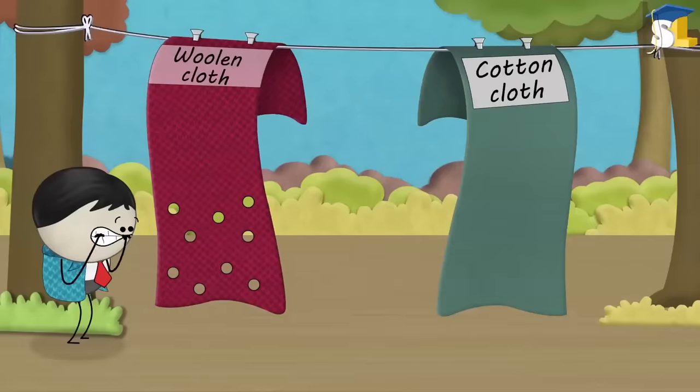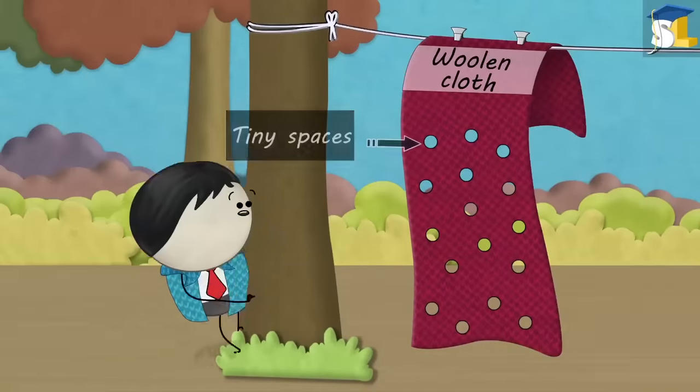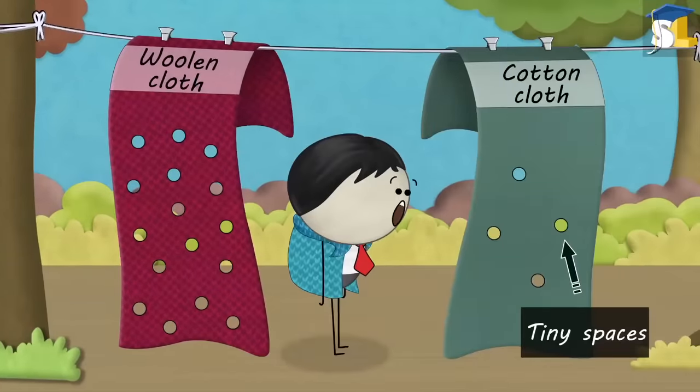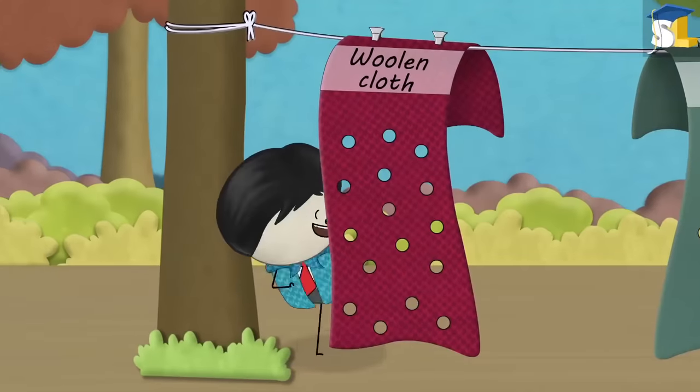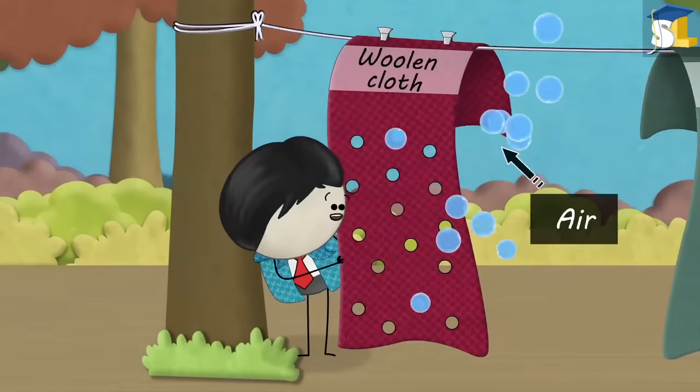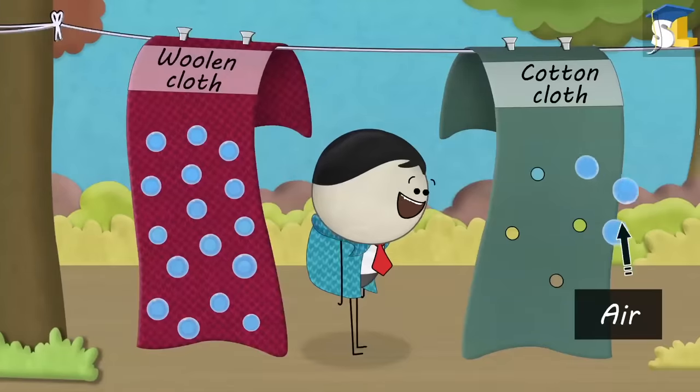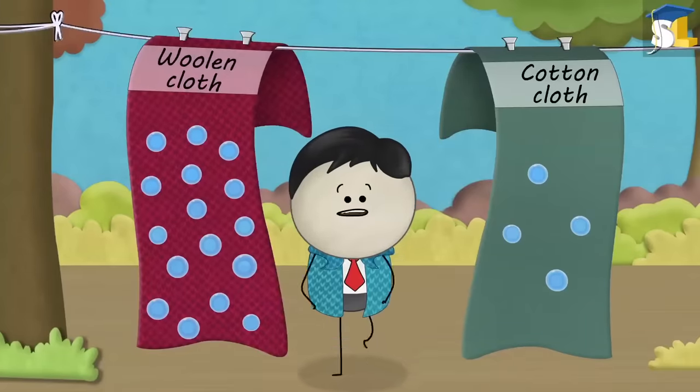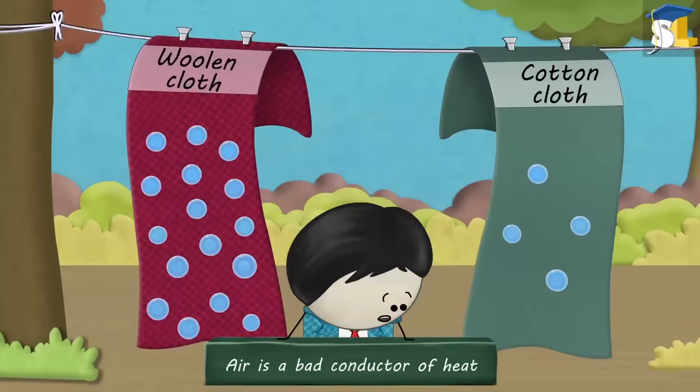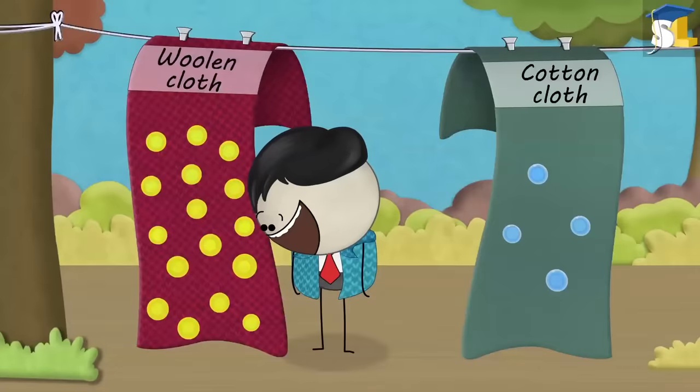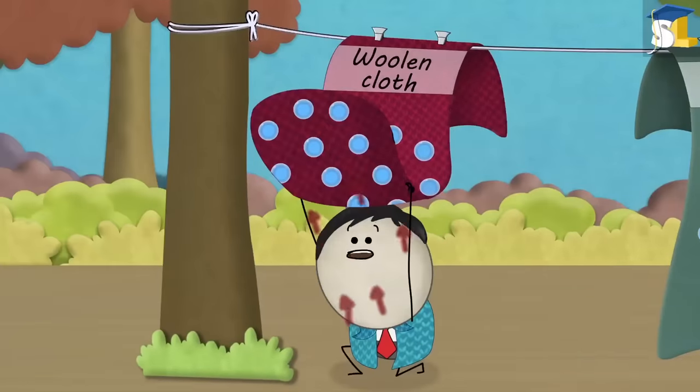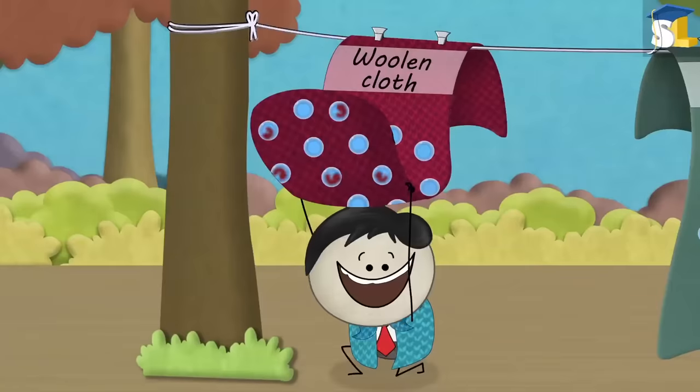This is because, in woolen clothes, there are many more tiny spaces as compared to that in cotton clothes. Due to these extra tiny spaces, woolen clothes trap more air as compared to cotton clothes. Now, since air is a bad conductor of heat, woolen clothes containing more air do not allow much of our body heat to escape into the atmosphere. Thus, keeping us warm.